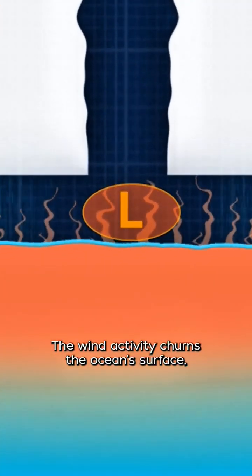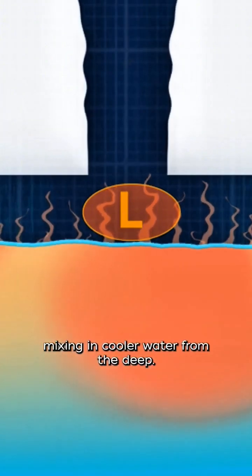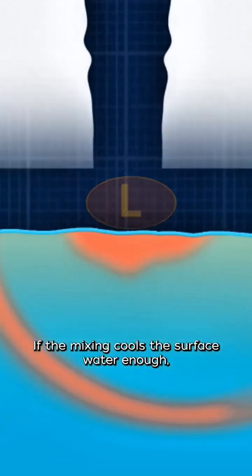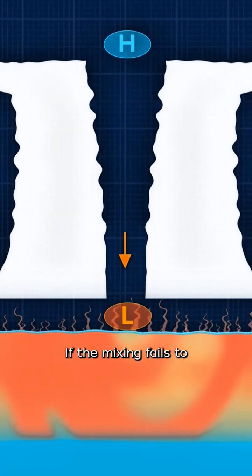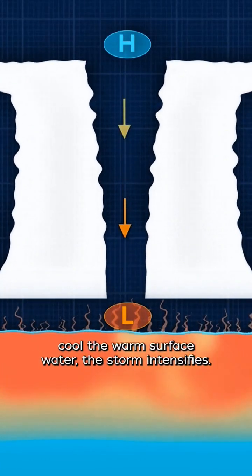The wind activity churns the ocean surface, mixing in cooler water from the deep. If the mixing cools the surface water enough, the wind slows down and the hurricane weakens. If the mixing fails to cool the warm surface water, the storm intensifies.